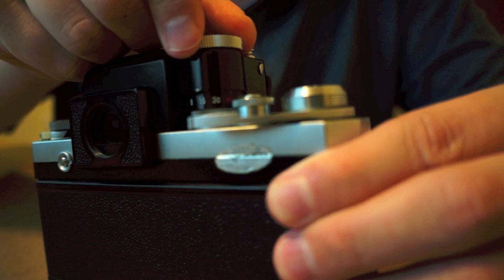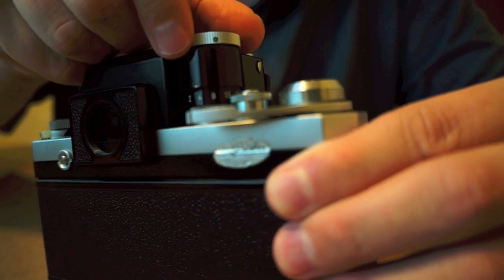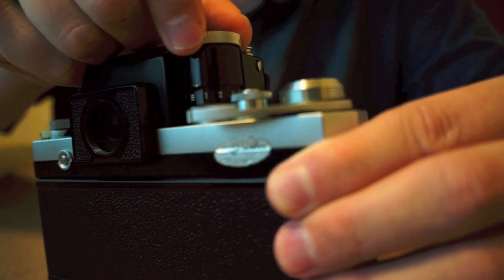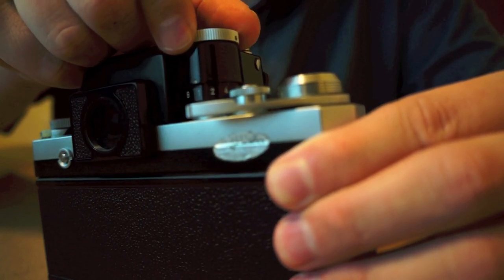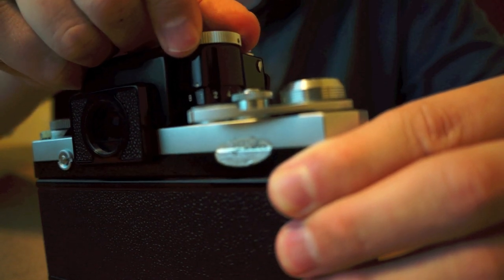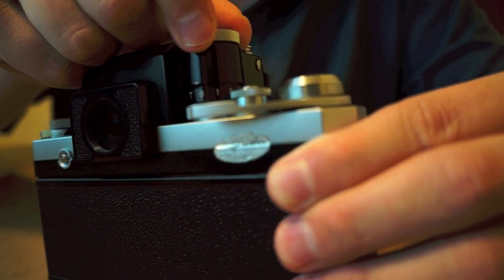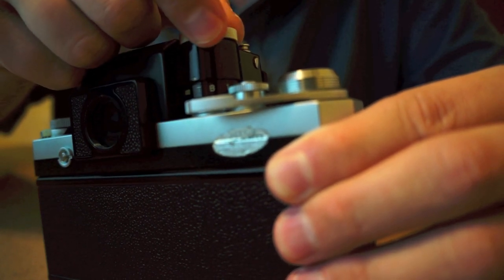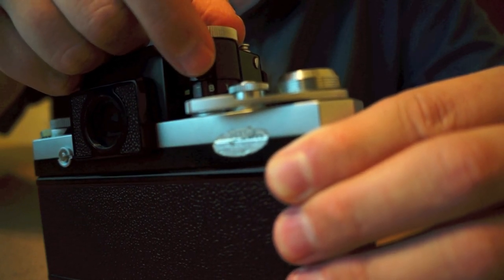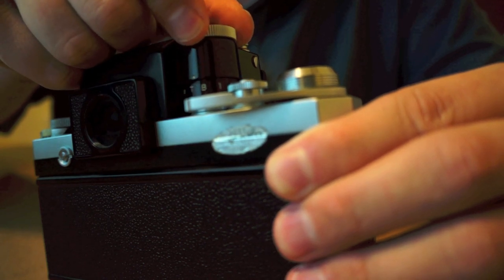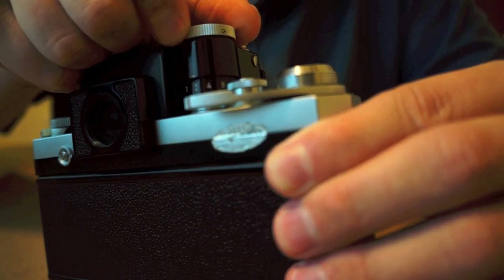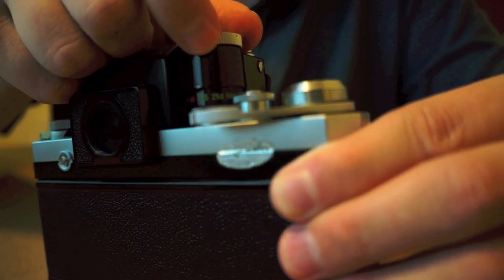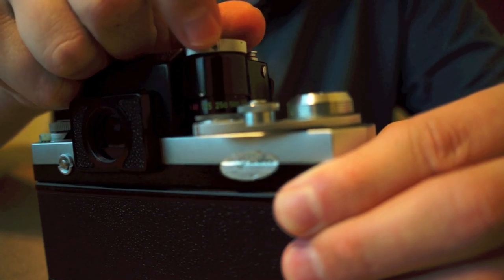Then we have 30, 15, 8, 4, 2, time, 1, which is one minute. And then bulb. And then T. And these are the very long exposure settings that you would use if you were doing like a night shot or something like that. For the most part, you're going to be up here around these numbers. Okay?